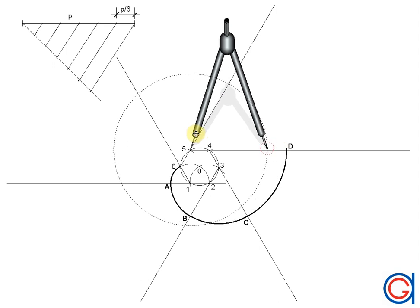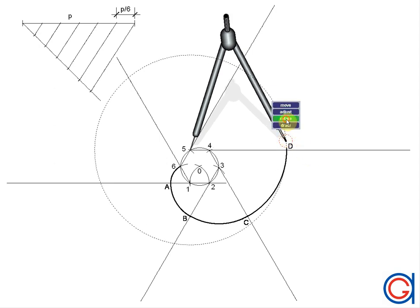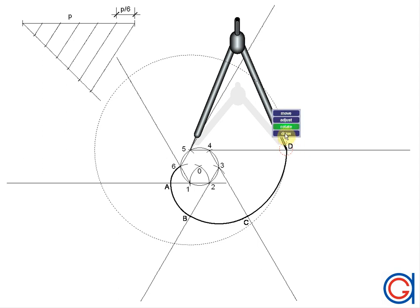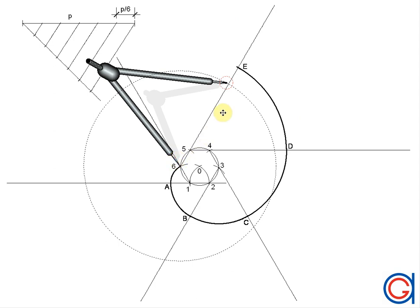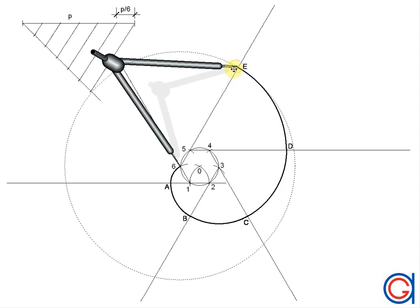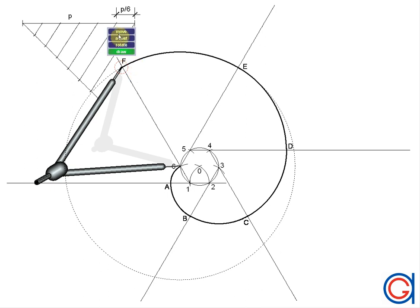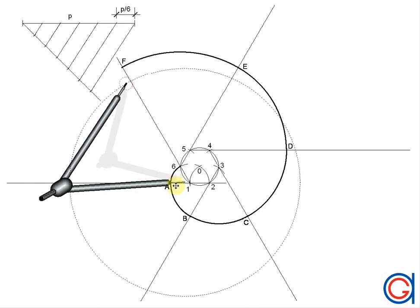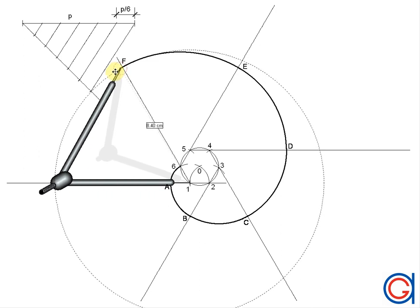Now continuing with our compass set on point five and length 5D, we scribe an arc until it cuts the following prolongation at point E. Again, with our compass set on point six and length 6E, we scribe an arc to the left until it cuts the following prolongation at point F. Here you can see the spiral forming from six separate circle arcs, and the distance from point six to F is equal to our given length P.